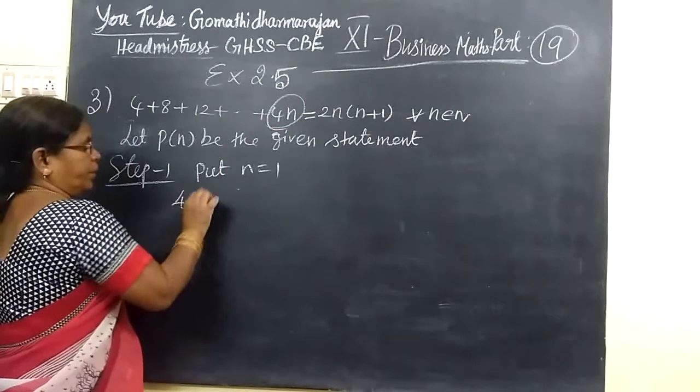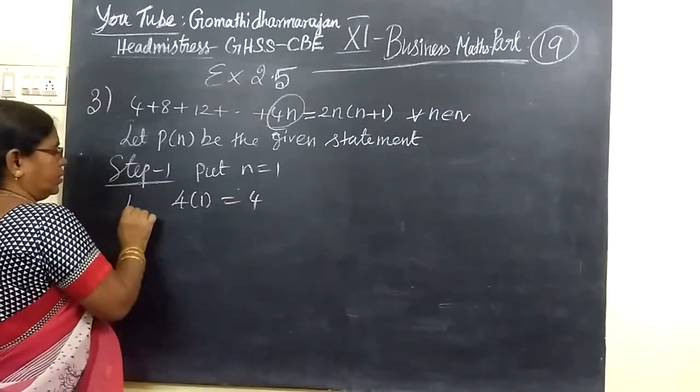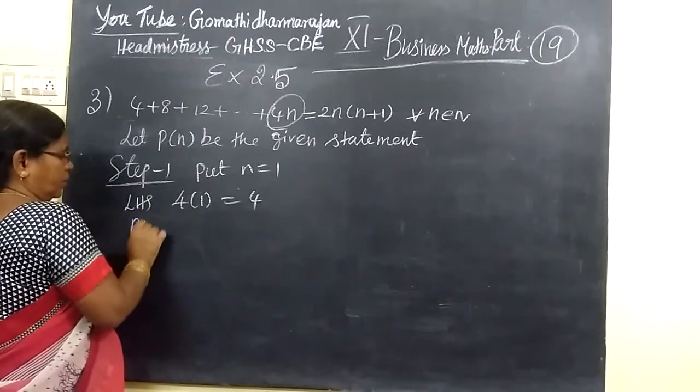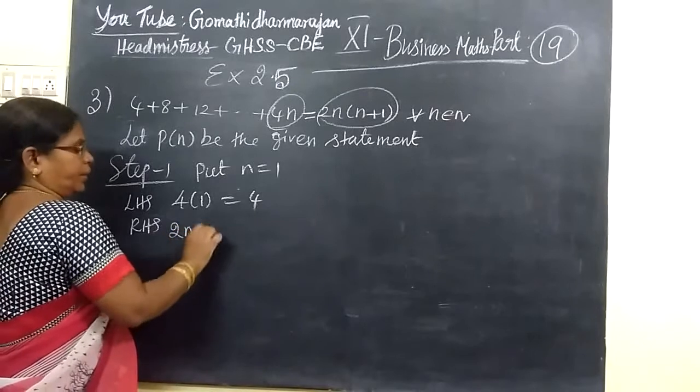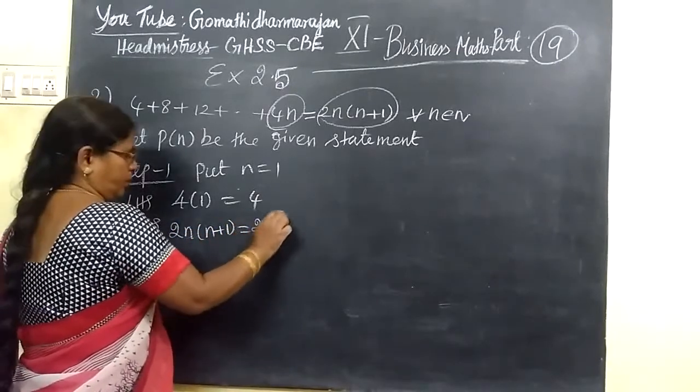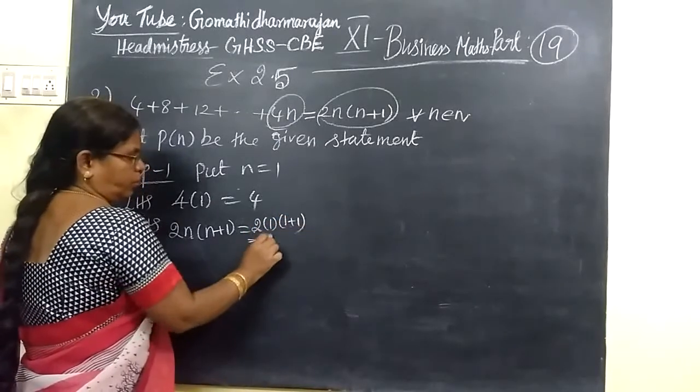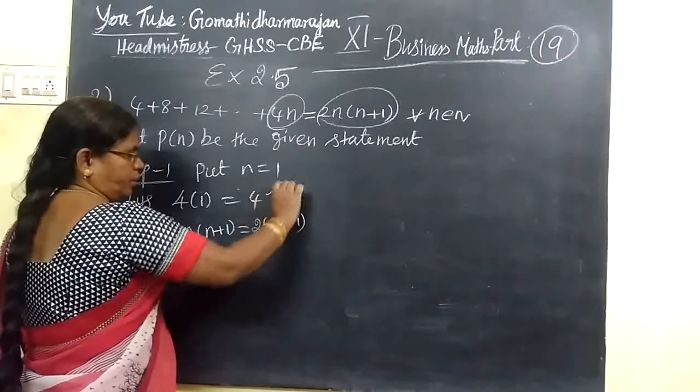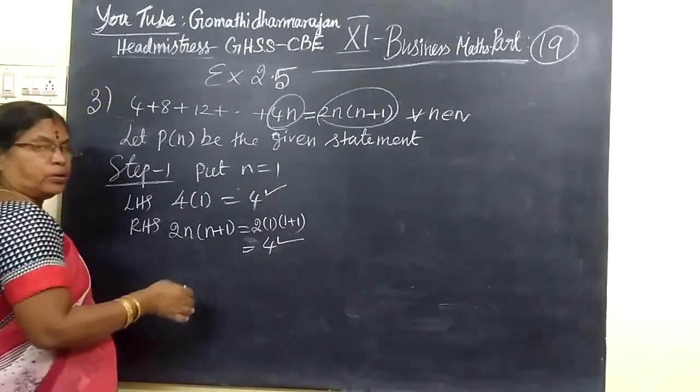Now consider the right hand side. 2N bracket N plus 1. For N equal to 1, write 1 bracket 1 plus 1, so we will do it to 4. So LHS is 4, RHS is also 4. True.